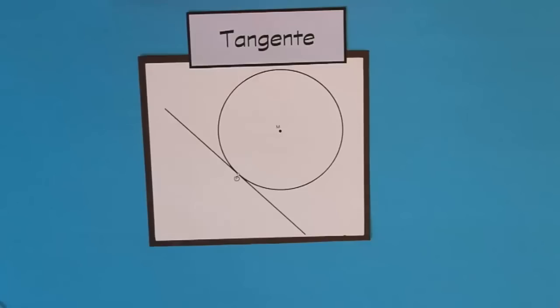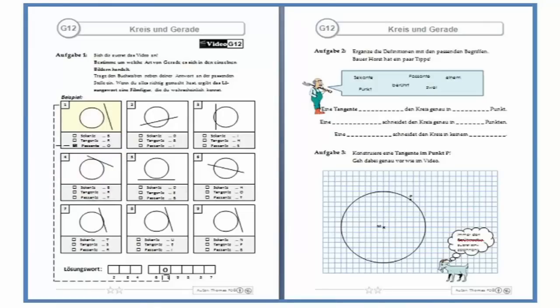Oder, dritte Möglichkeit, die Gerade ist eine Tangente, die den Kreis in genau einem Punkt berührt. Und mit diesem Wissen könnt ihr jetzt da die letzte Grundaufgabe G12 bearbeiten. Nach dieser Grundaufgabe könnt ihr aus allen Bereichen eures Arbeitsplans beliebige Aufgaben machen, die ihr möchtet. Ich wünsche euch gutes Gelingen.